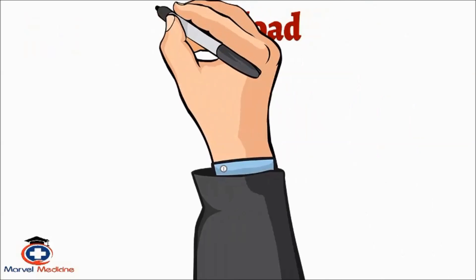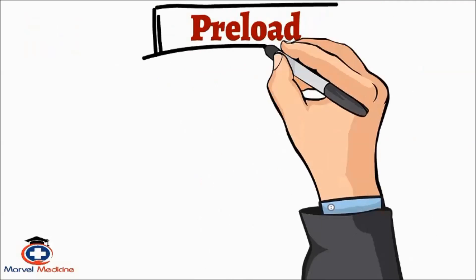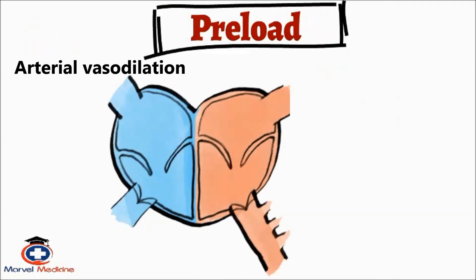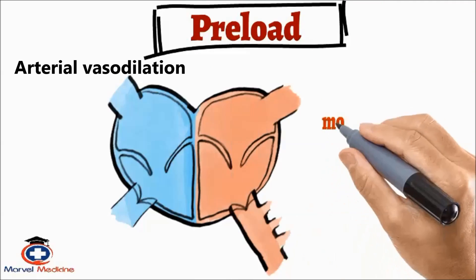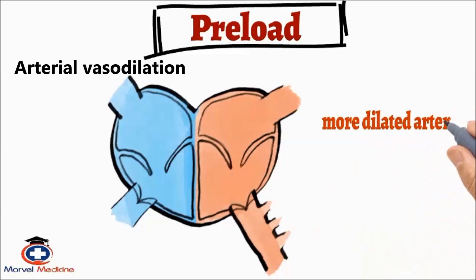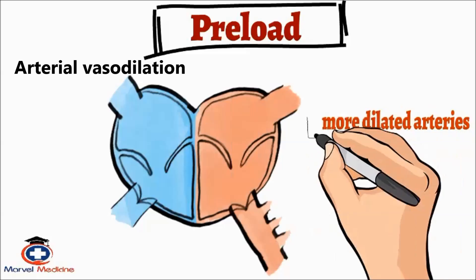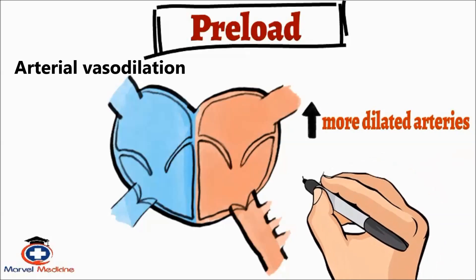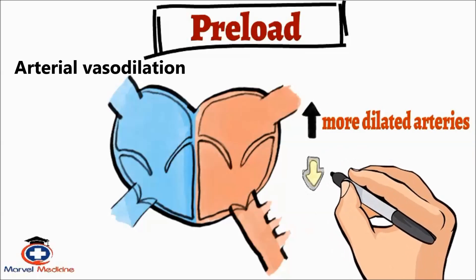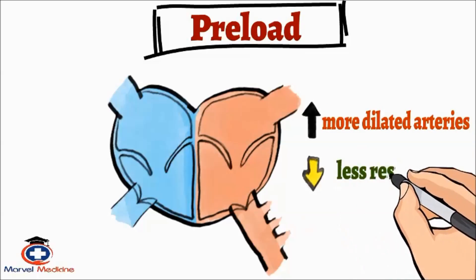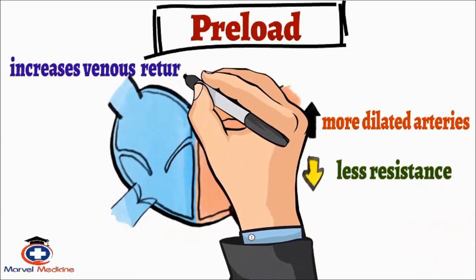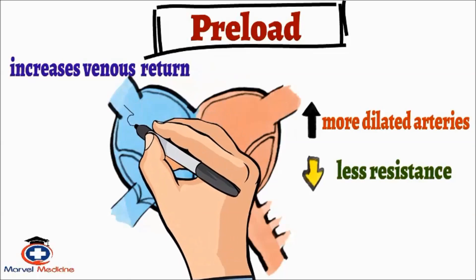The other thing that increases preload is arterial vasodilation. The more dilated these arteries are, the less resistance and the more blood that can get to the venous side and back to the heart.